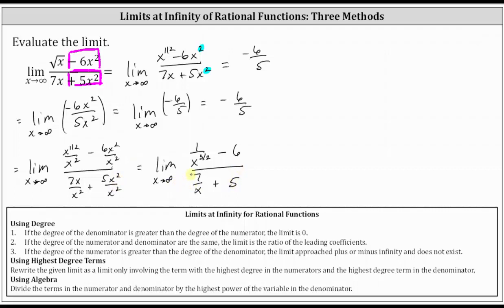Remember, when we have a fraction where the numerator is a constant and the denominator contains a variable that approaches positive or negative infinity, the value approaches zero. So 1 divided by x to the power of 3/2 approaches zero as x approaches infinity. Negative 6 is not affected by x. In the denominator, 7 divided by x approaches zero as x approaches infinity, and 5 is not affected by x. Simplifying, we again get negative 6 divided by 5, or negative 6 fifths. So all three methods are valid for determining this limit at infinity. I hope you found this helpful.